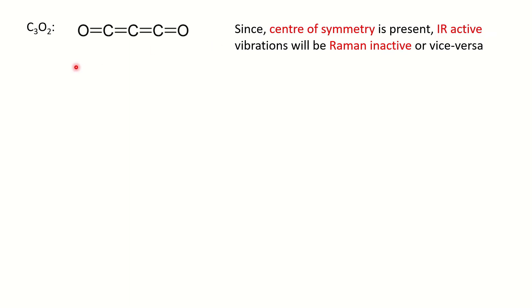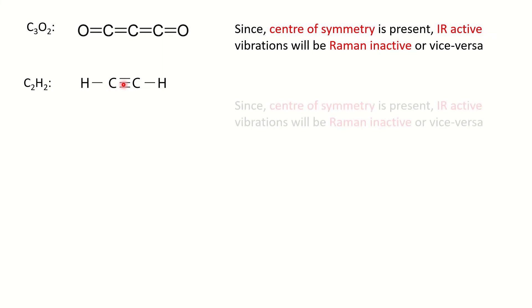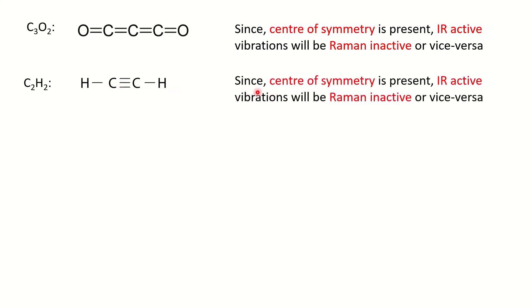Similarly, for C2H2 (acetylene), the center is the triple bond — you can see the red dot of my cursor marking the center of the molecule. If you go in both directions an equal distance, you meet the same atom, hydrogen. So we can say the molecule C2H2 also possesses a center of symmetry.